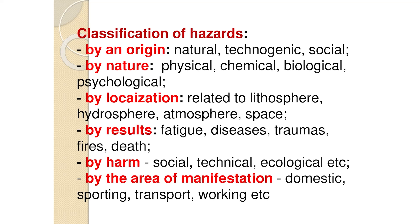There are several classifications of hazards. By origin, hazards can be natural, such as a volcanic eruption or tsunami; man-made, like an explosion at a nuclear power plant; or social, for example, war. Based on the nature of the hazard, a person can be affected by harmful physical factors like high temperature, chemicals such as chlorine poisoning, biological factors such as viruses, bacteria and fungi, and psychological factors — psychological injuries harm our health no less than physical injuries.